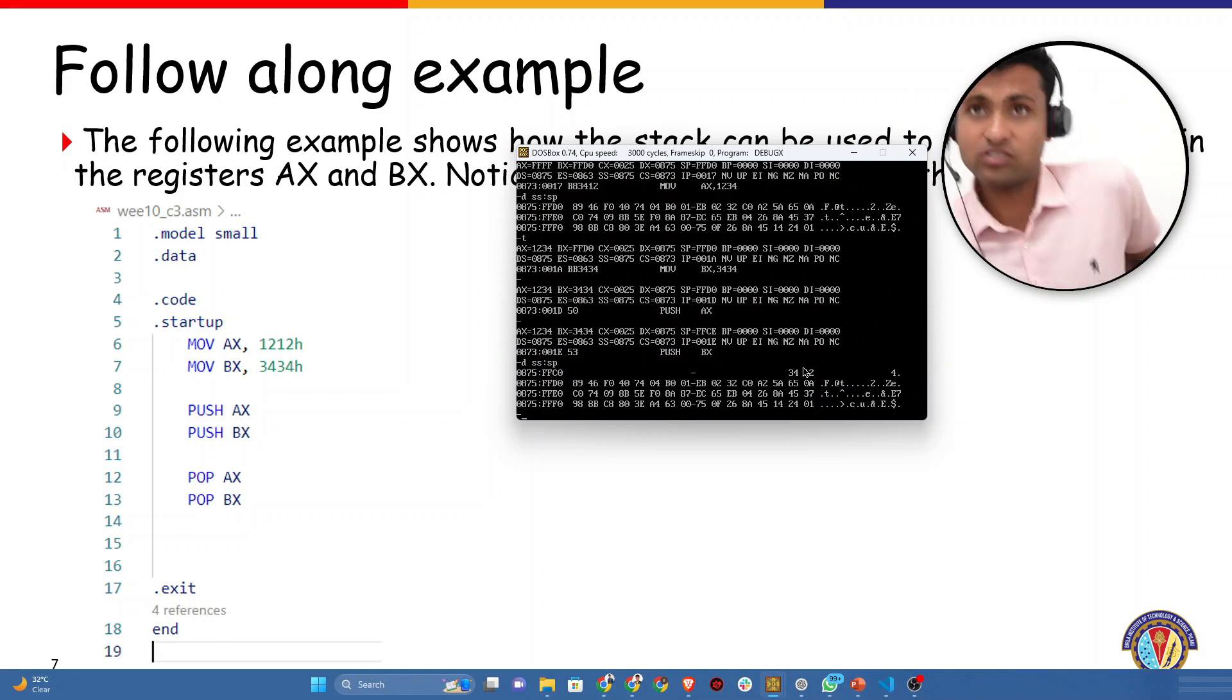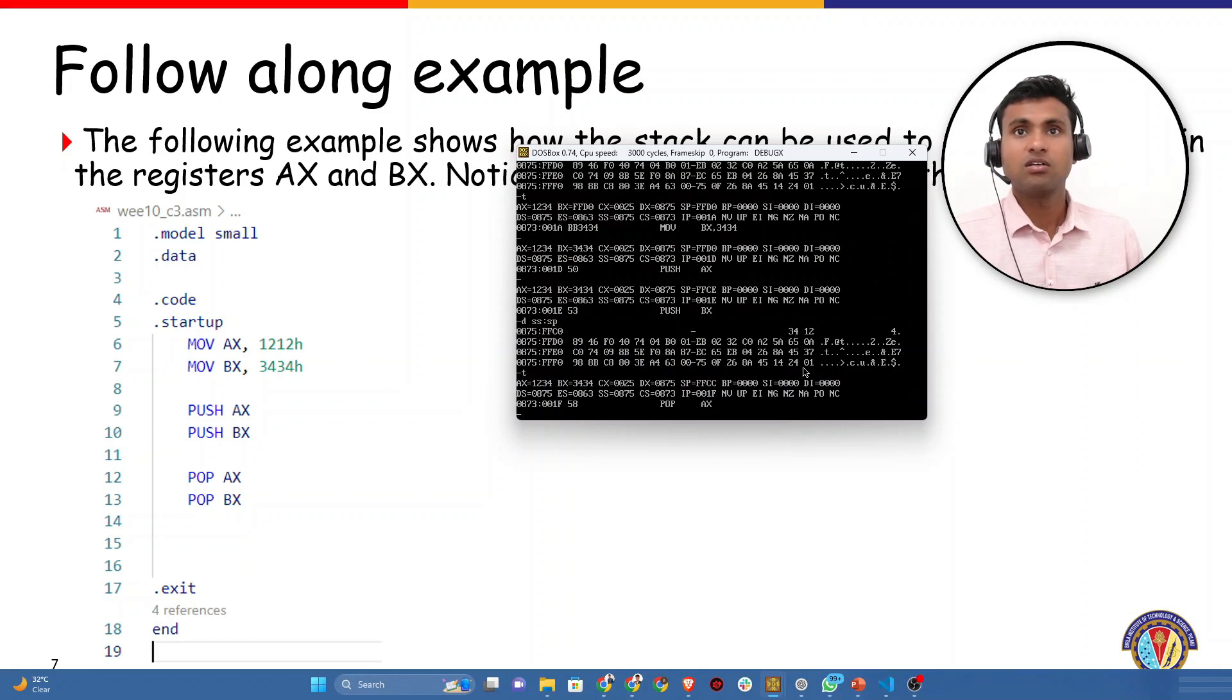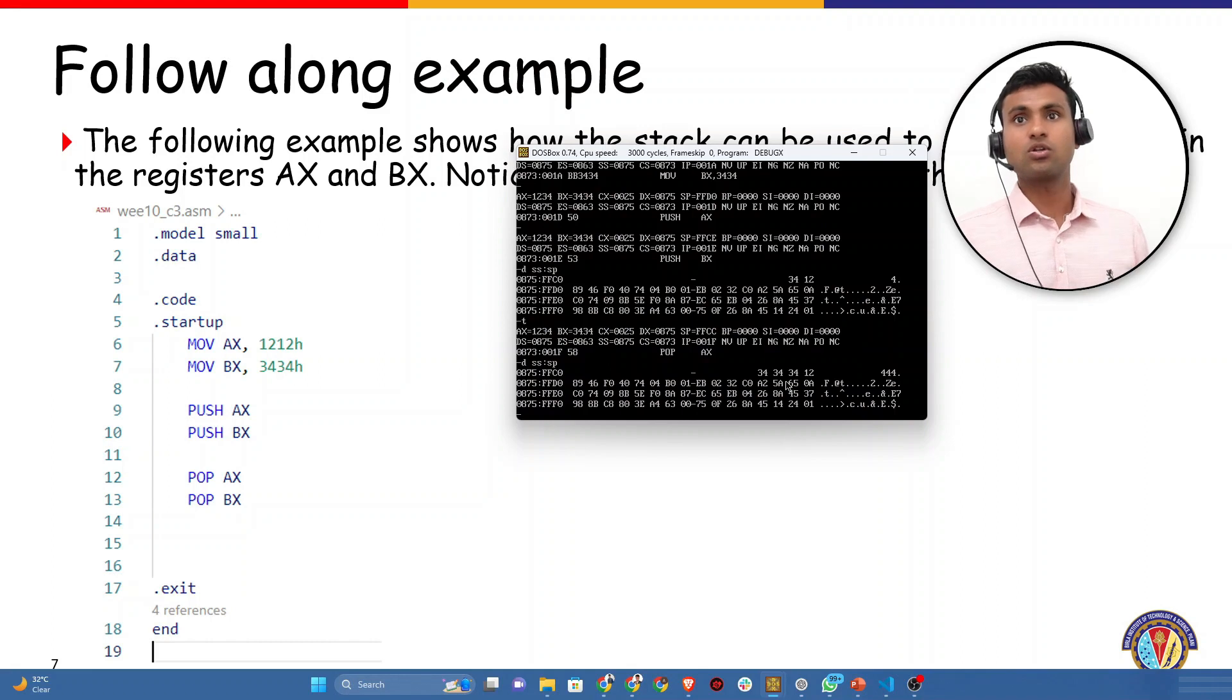Now let's execute the next operation, which was push BX. Again, let's take a look at the memory location. Now 3434 has come, which means BX also is pushed. So 16 bits are pushed here.